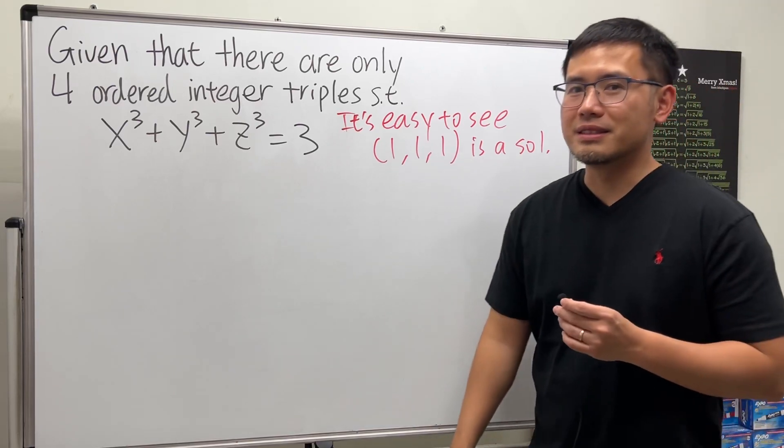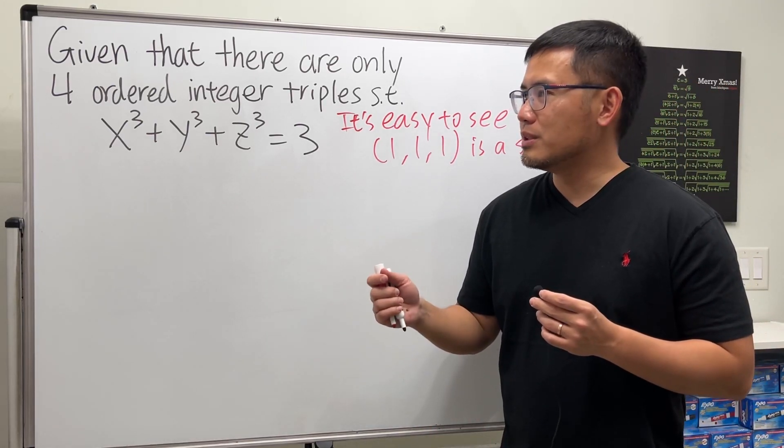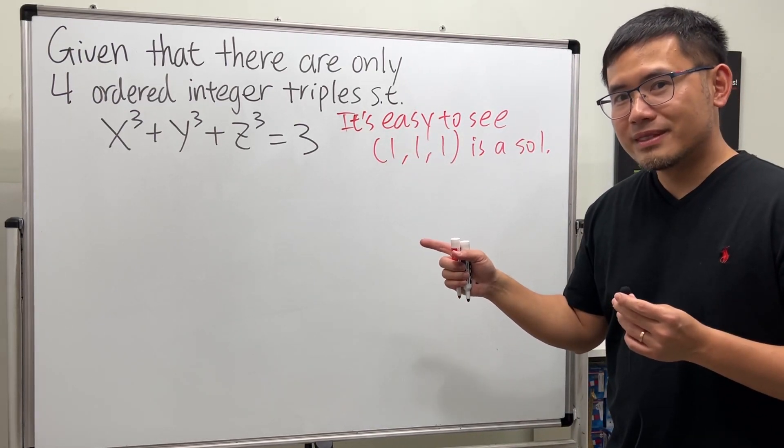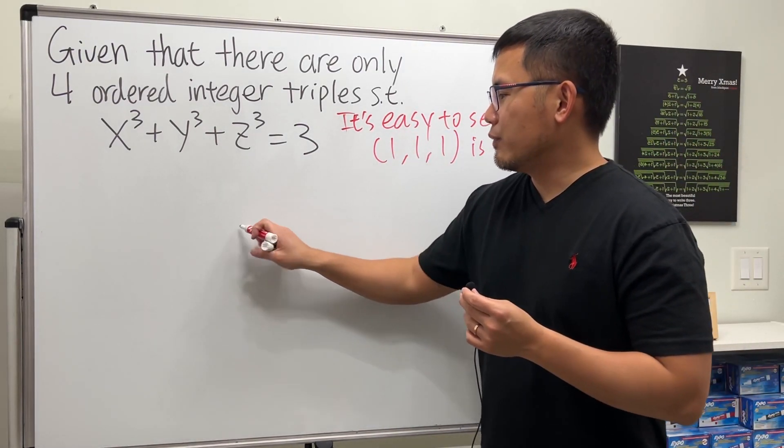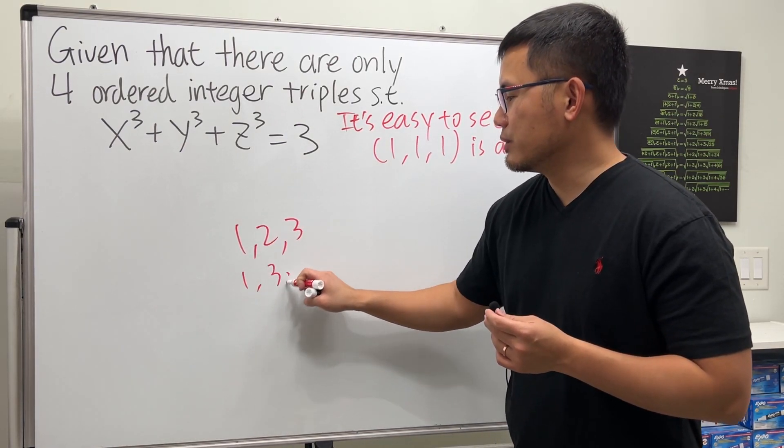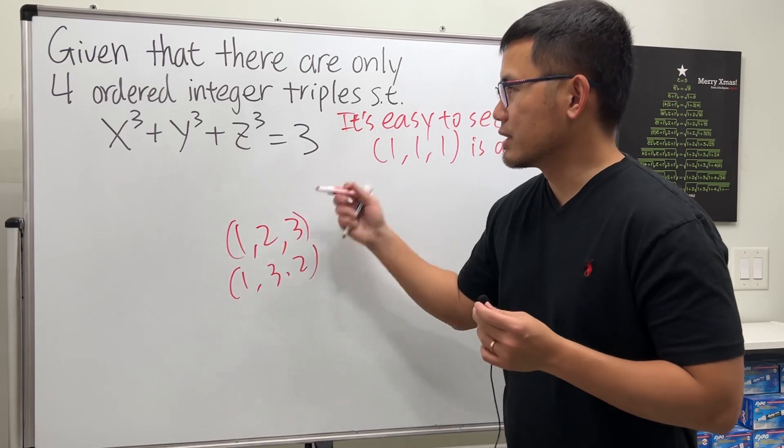But now, how about the others? If we can find the other three, then we're done. By the way, remember this is an ordered triple. So if you have (1, 2, 3), this is different than (1, 3, 2). Just keep that in mind.